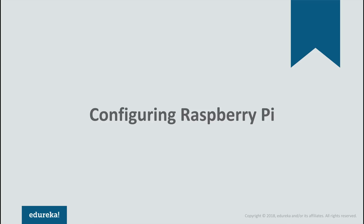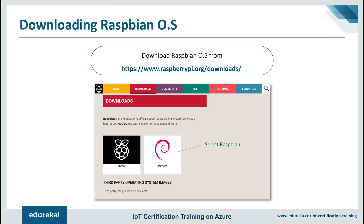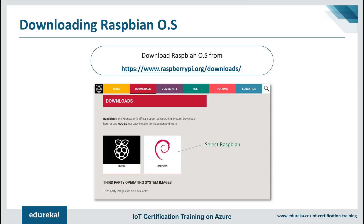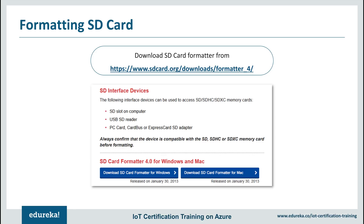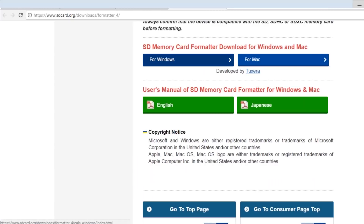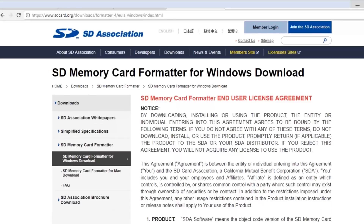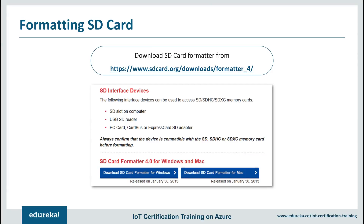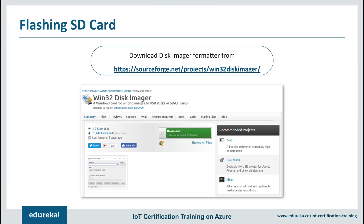Now we'll understand how to configure Raspberry Pi. The first step is to download the Raspbian operating system from raspberrypi.org — I'll download the zip file. After downloading Raspbian, we load it onto our SD card, but first we need to format the SD card. We'll go to sdcard.org to download the SD Card Formatter — available for both Windows and Mac. Since I'm using Windows, I'll download it for Windows and accept the license agreement. After formatting the SD card, we need a disk imager to flash the operating system onto it, so we'll go to sourceforge.net and download the Win32 Disk Imager.